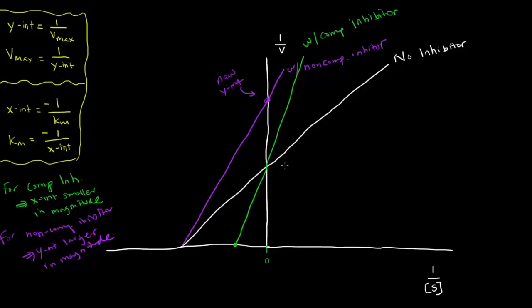For the competitive inhibitor, we have a new x-intercept. For the non-competitive inhibitor, we have a new y-intercept. I hope that all makes sense and was helpful. In the next video, I'll provide an example of the Lineweaver-Burk plot. See you next time.